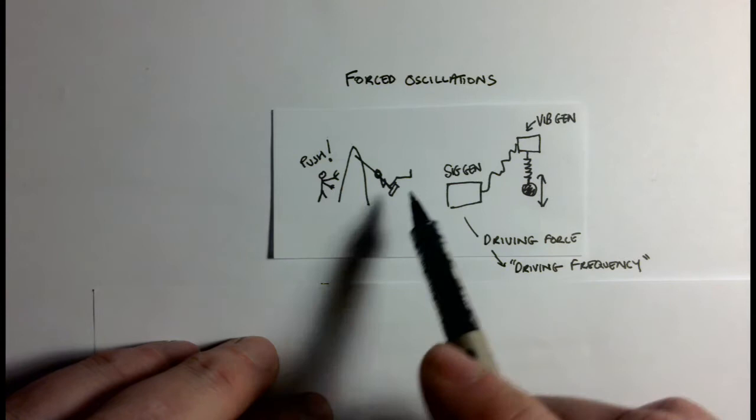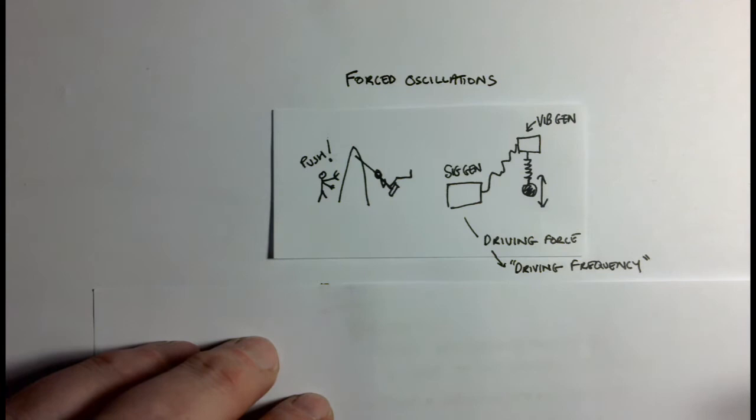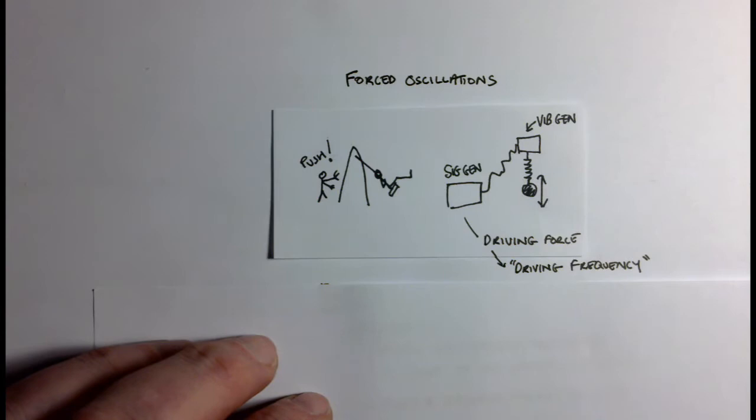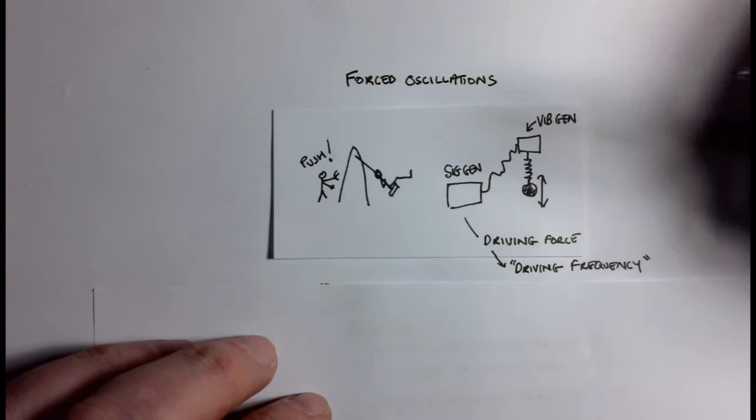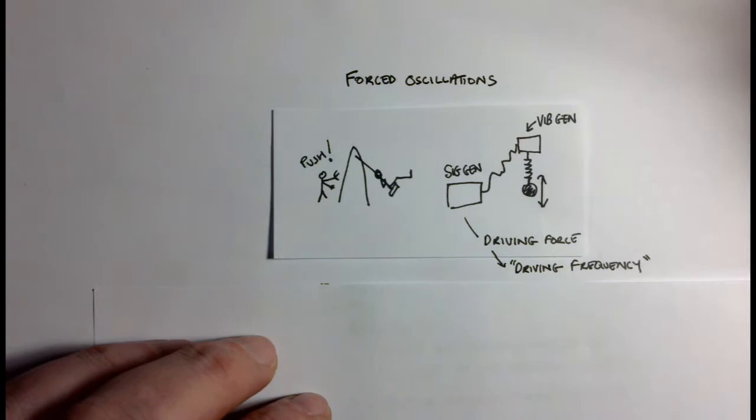Another way of demonstrating forced oscillations, which would show up in exam questions quite often, is a setup something like this where we've got a signal generator that produces an alternating potential difference connected to a vibration generator. This time it's held upside down supporting a spring with a mass on the end of it, and you're driving frequency.